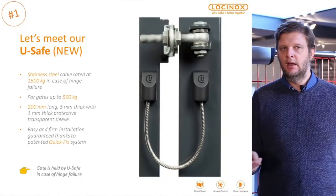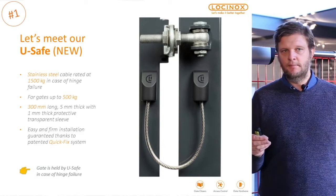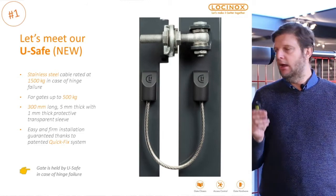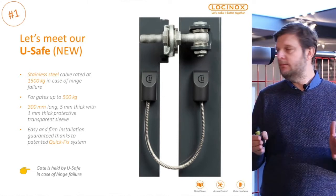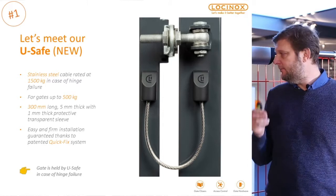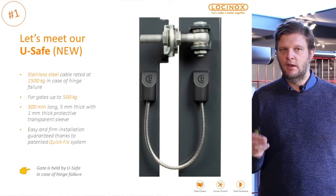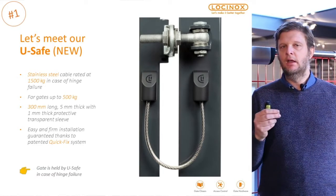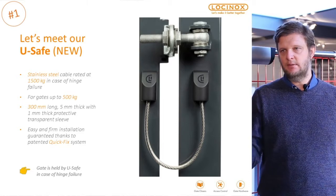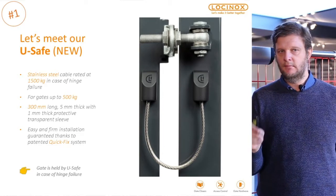What does that exactly mean? We have done the testing internally. That means it can be used on gates up to 500 kg — very important. The length is 300 millimeters — that's the maximum — and five millimeters thick. Typical Lock & Lock quality, and of course easy to install. It comes standard with quick fixes. If you have questions about that, please have a look at our website — there is a really nice video showing how strong the quick fixes are.